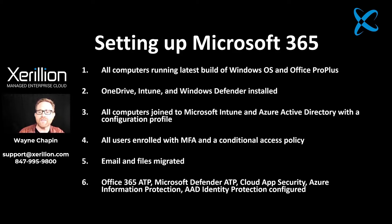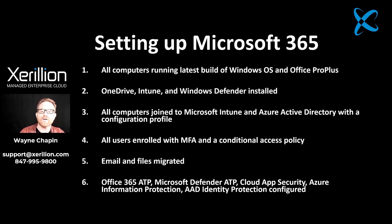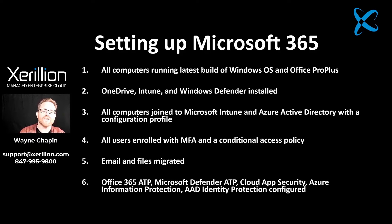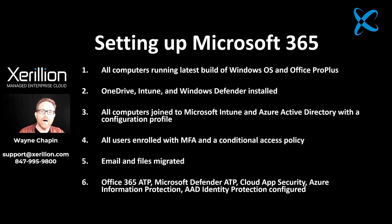Here's what it looks like to properly set up Microsoft 365. Number one, all computers should be running the latest build of Windows OS and Office Pro Plus. Number two, OneDrive, Microsoft Intune, and Windows Defender installed on each computer. Number three, all computers joined to Microsoft Intune and Azure Active Directory with a configuration profile. Number four, all users enrolled in multi-factor authentication with at least a basic conditional access policy. Number five, emails and files migrated. Number six, set up the Microsoft 365 management and security stack: Office 365 Advanced Threat Protection, Microsoft Defender ATP, Cloud App Security, Azure Information Protection, and Azure Active Directory Identity Protection — all configured.